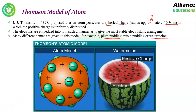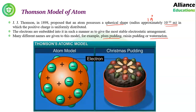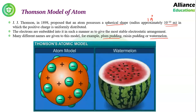Thomson proposed this model on the basis of his cathode ray discharge tube experiment. Through his experiments, he also showed that electricity can conduct through gases. He conducted experimental investigations on the conduction of electricity by gases, and for this he was awarded the Nobel Prize in 1906.